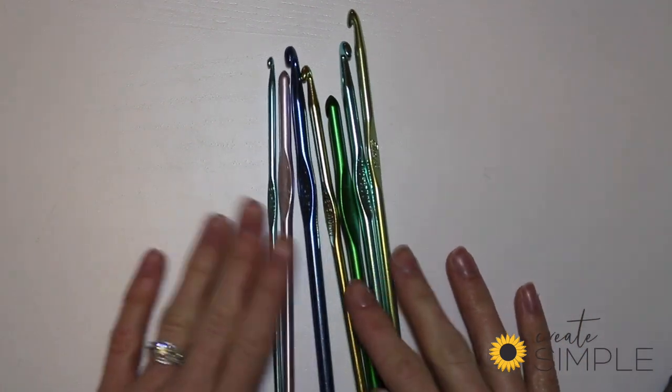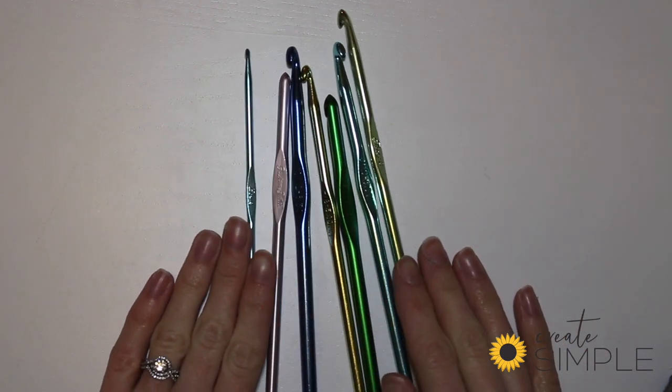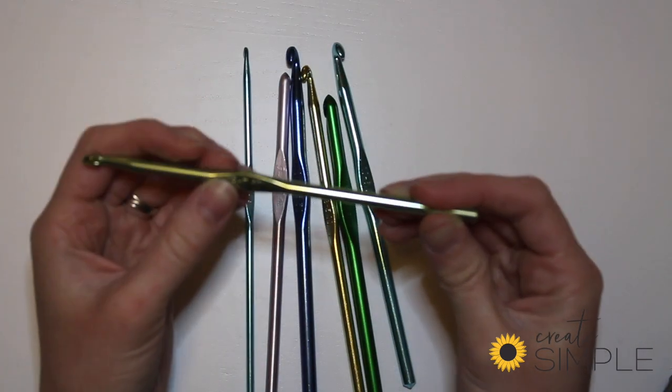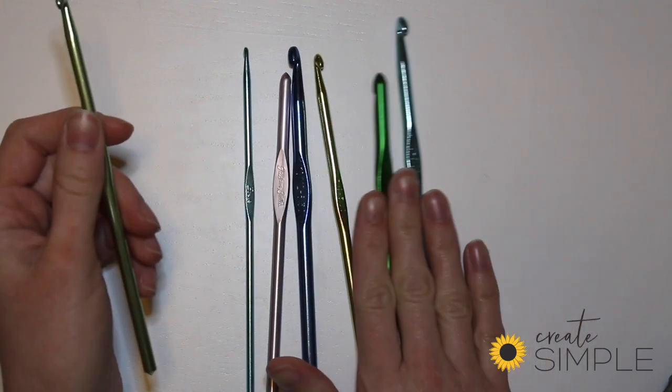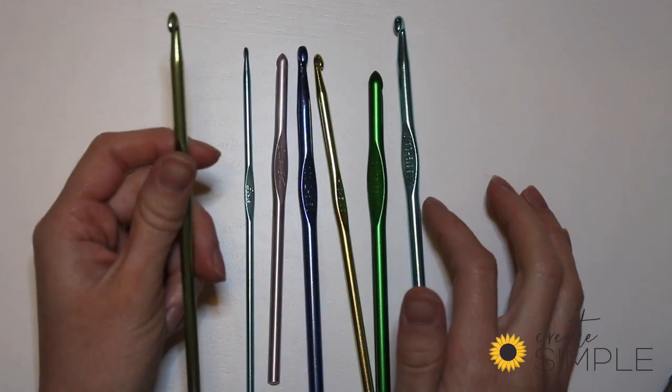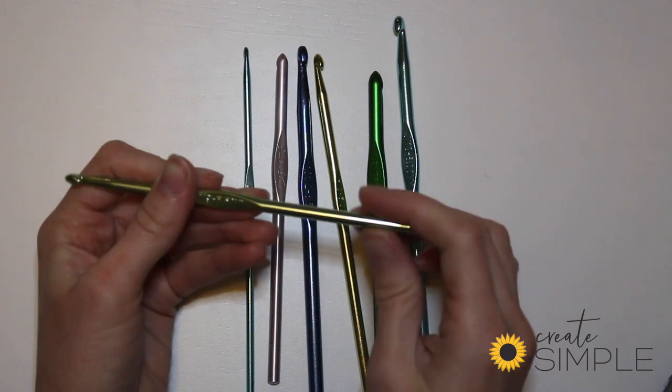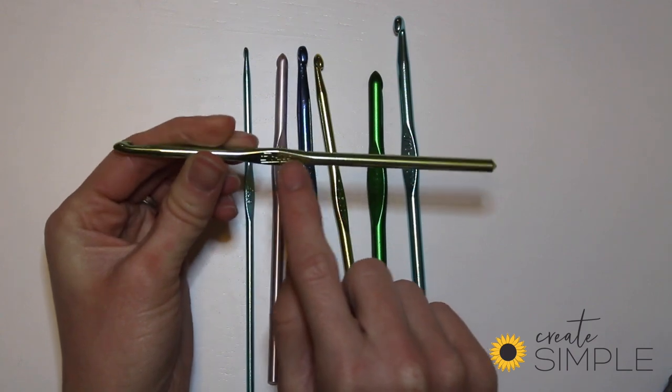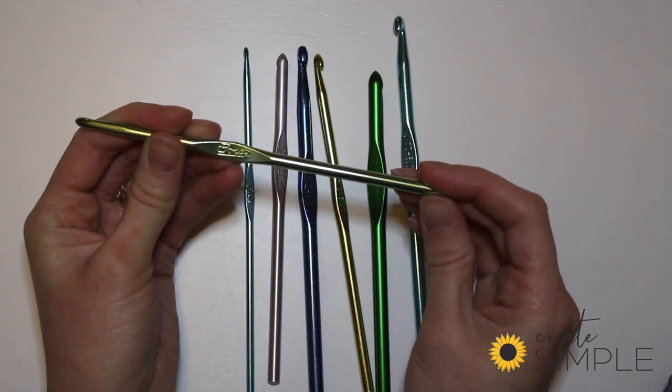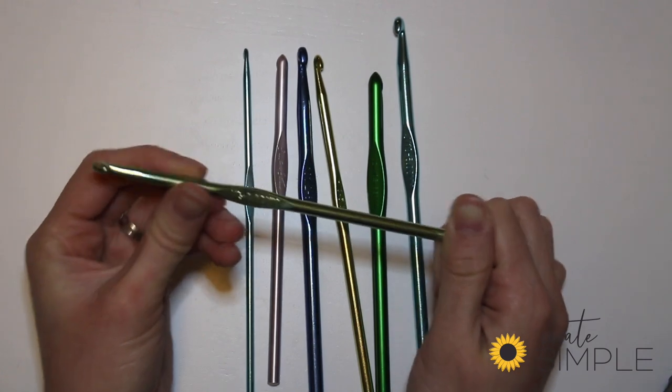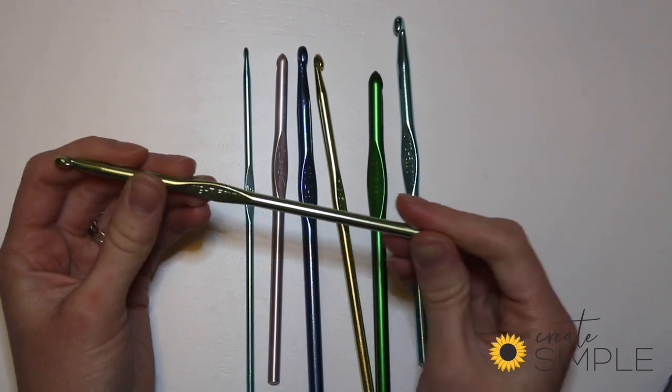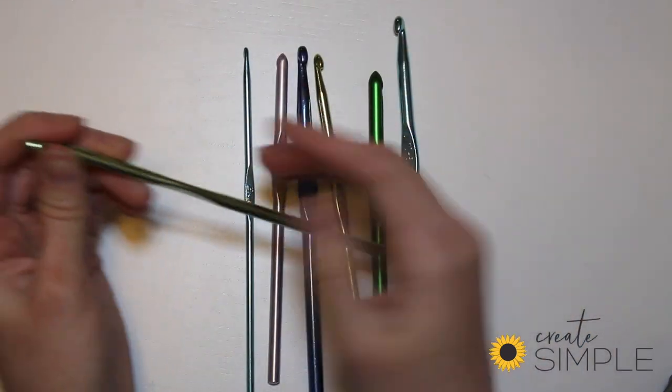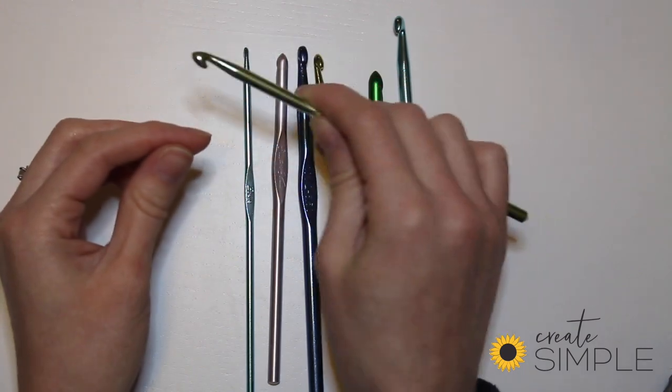These are some basic hooks that you might choose to get from wherever you buy craft supplies. There's all different colors and they represent different sizes based on what brand you get. Most of these will have the size of the hook somewhere on the side, kind of engraved. I used these hooks for a long time, but something funny that I noticed when I was doing longer projects is it would start to get the inside of my hand sore from holding it.